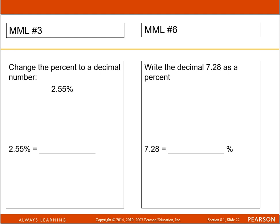MyMathLab number three. Change the percent to a decimal number. To change any percent, you just divide it by 100, because all percentages come out of 100. So if you have 2.55% of something, that's going to move this decimal point two places to the left.